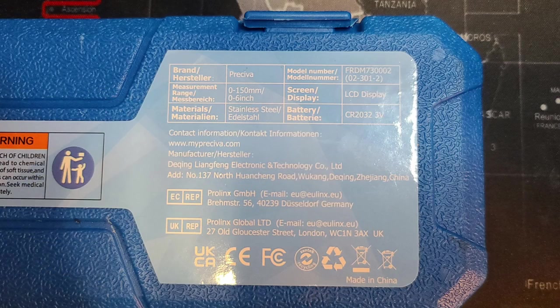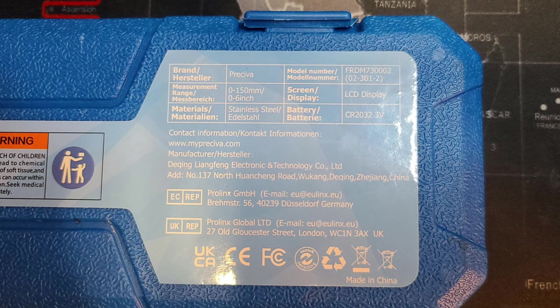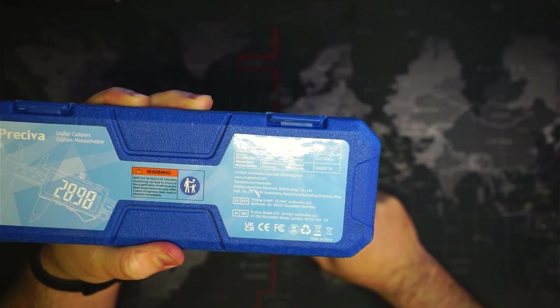Okay, the brand is Presiva. That's the model number. It'll measure up to 150 millimeters or 15 centimeters. It has a large LCD display. It takes a 2032 3-volt battery and is made mostly of stainless steel.